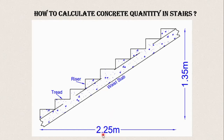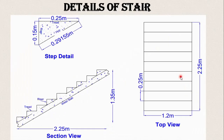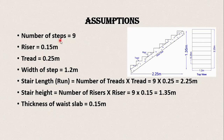Here you can see an example with a 2.25 meter run and 1.35 meter height, a width of 1.2 meter with riser and tread. We have a total of nine steps with a 0.15 meter riser and 0.25 meter tread. The stair run is 2.25 meter, the height is 1.35 meter, and the thickness of the waste slab is 0.15 meter.